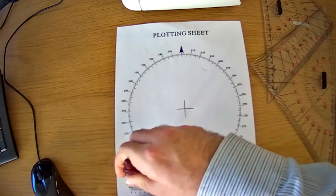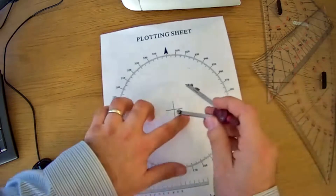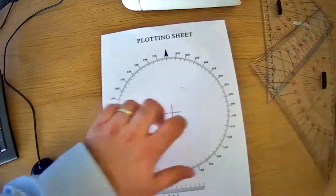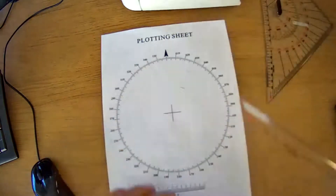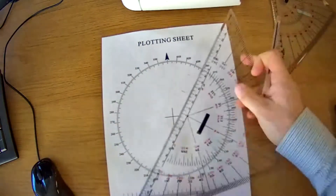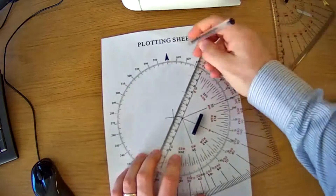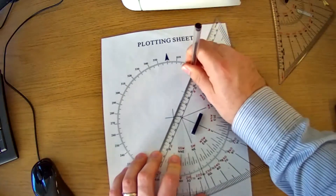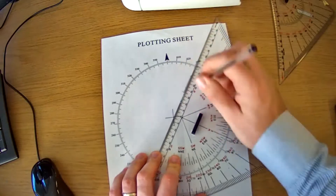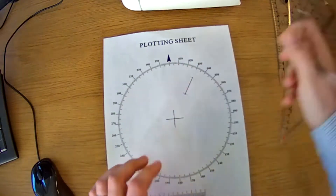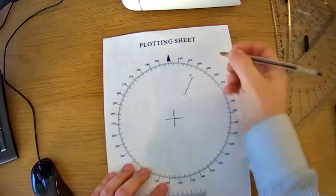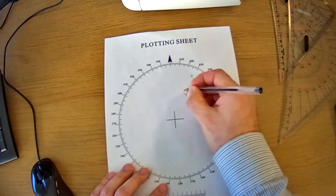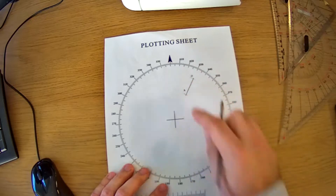Plot all three of those and then join them up to get your O-to-A line. I'm going to do it in pen so it shows up better on camera — a sharp pencil is better, but pencil doesn't always show up well. That gives us O, the origin of the plot at the start time, and A, the actual position of the vessel at the end of the plot.